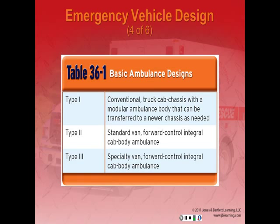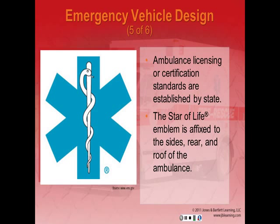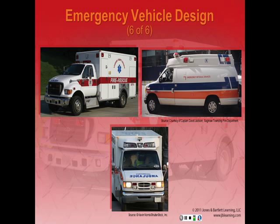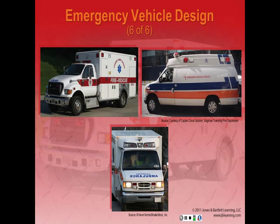Standards for ambulance licensing or certification are established by each state, and many states use federal specifications like the KKK-A 1822-F, effective August 2008. The Star of Life emblem identifies vehicles as ambulances and is affixed to the sides, rear, and roof. There are three types: a Type 1 truck chassis with a modular box, a Type 2 van-type ambulance, and a Type 3 front-end van chassis with a modular box.